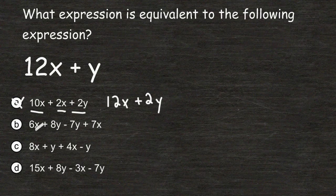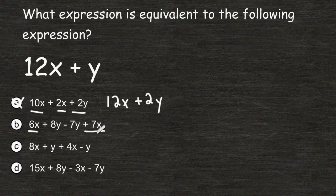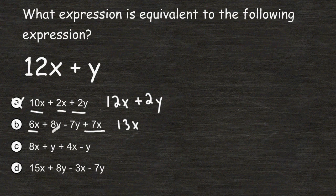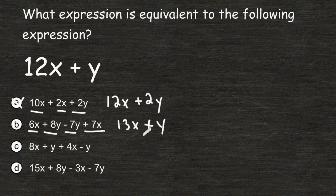Now for choice B we are going to combine the terms 6x and 7x. Because there is a plus sign in front of the 7x we must add 6x to 7x which is a total of 13x. If we take 8y and subtract 7y that leaves us with 1y so we can just write plus y. Even though this expression is close to the given expression they are not equivalent so we can eliminate choice B as well.